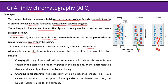Alternatively, non-specific elution with some reagents that can break protein-ligand interactions includes changing the pH using dilute acetic acid or ammonium hydroxide, which results in a change in the state of ionization of groups in the ligands and the macromolecules critical to ligand-macromolecule binding. By changing the pH, the interaction between the target analyte and the immobilized ligand can break. This breakage can also be achieved by changing the ionic strength — not necessarily associated with a change in pH. One molar sodium chloride is frequently used for this purpose.